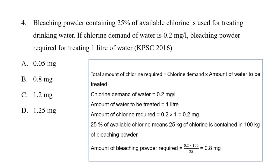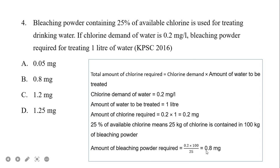Since 25% of bleaching powder is chlorine, 100 kg bleaching powder contains 25 kg chlorine. Therefore, bleaching powder required = 0.2 × (100/25) = 0.8 mg. The answer is option B, 0.8 mg.